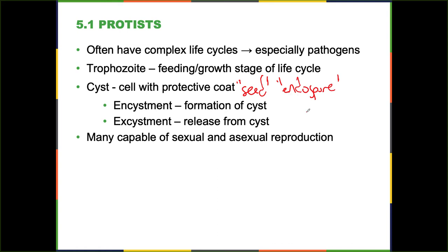You'll occasionally see the term oocyst — kind of like an egg cyst. For our purposes, an oocyst and a cyst are more or less the same thing. Many protozoans are capable of both sexual and asexual reproduction, which is very important in the life cycle. Asexual reproduction is fast and easy, allowing the parasite to get its numbers up quickly. Sexual reproduction is important for genetic diversity — you need a diverse gene pool to really survive.